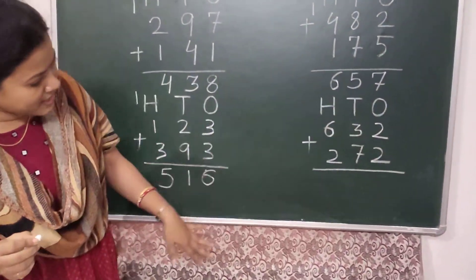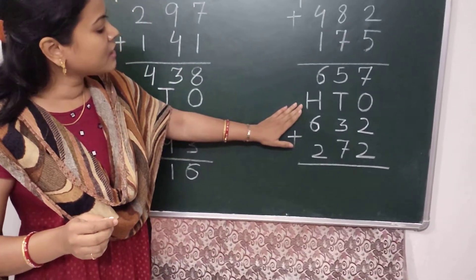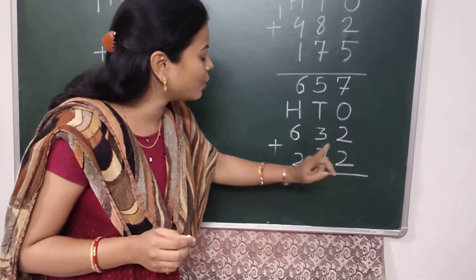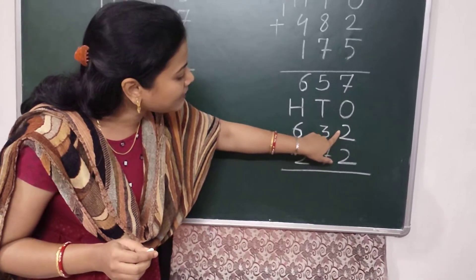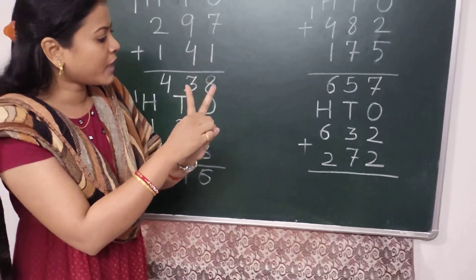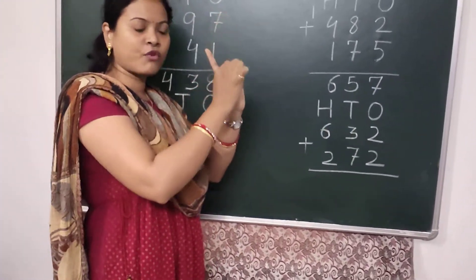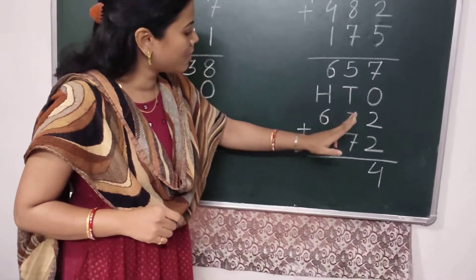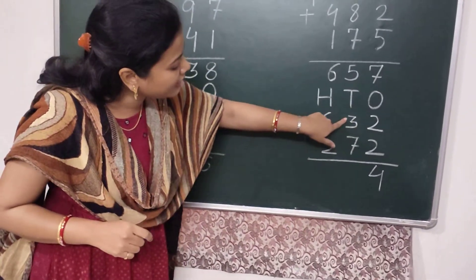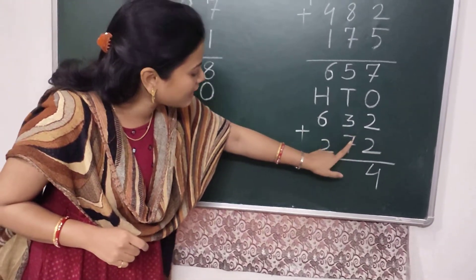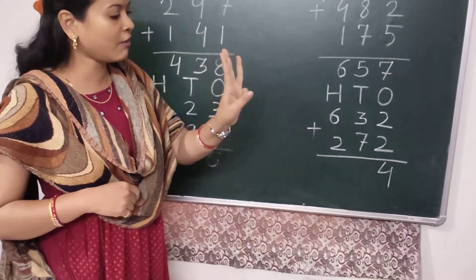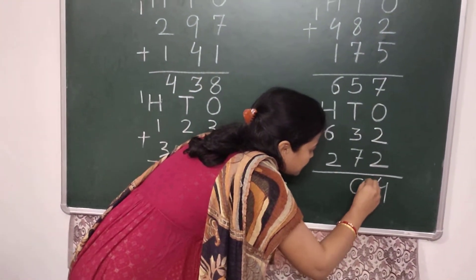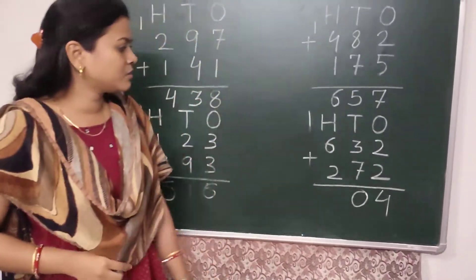Next sum is 632 plus 272. In the 1's place, the numbers are 2 and 2. I keep 2 in my mind and take 2 fingers: 2, then 3, then 4. I write here 4. Then in the 10's place, the numbers are 3 and 7. 7 is the larger number, so I keep 7 in my mind and count 3 fingers: 7, then 8, 9, 10. I write here 0 and carry 1 to the 100's place.